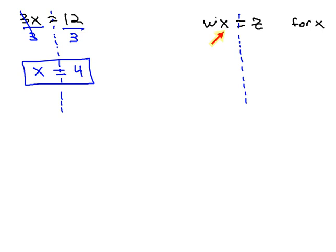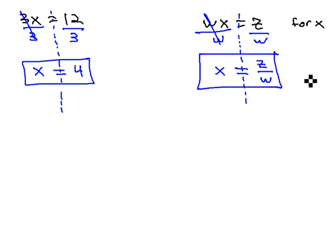To get the x alone, we need to divide by whatever is with it. Just like we divided by 3 in the first problem, we're going to divide by w in this problem. When we divide both sides by w, the w's divide out and the x is alone. It is equal to this fraction, z over w. Once the x, the only x, is alone, we have our solution.